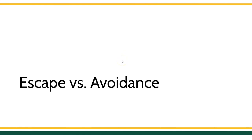All right everybody, it's Veronica Howard. We're going to talk a little bit more about some examples of escape and avoidance. Remember that this content really is the most challenging content. Students really struggle here semester after semester because negative reinforcement is really difficult to wrap your head around. This idea of doing a behavior to prevent or escape something that's currently happening — it's not intuitive.